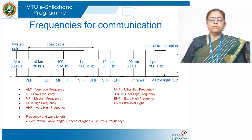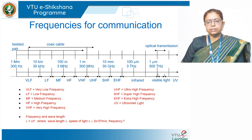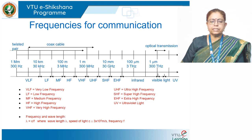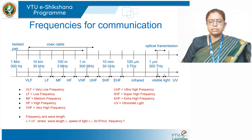Let us start with the frequencies used for communication. In the diagram you can see an Electromagnetic Spectrum. This spectrum has frequencies from left to right: 300 hertz, 30 kilohertz, 3 megahertz, 300 megahertz, 30 gigahertz, 3 terahertz, 300 terahertz and beyond. The frequency bands are named VLF, low frequency, medium frequency, high frequency, very high frequency, ultra high frequency, super high frequency, extra high frequency, and then visible light, infrared, ultraviolet light, etc.